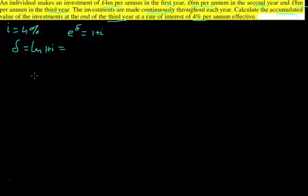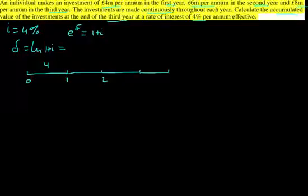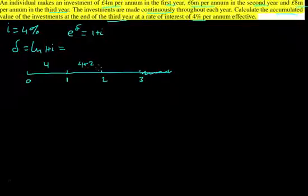So now let's find out the accumulated value. We're going to be using series. Let's have a quick look at what these payments actually look like. We're starting here and getting £4 million in the first year. Then in the second year, we're getting that £4 million again, plus another £2 million. And in the third year, we're getting £8 million — so that's the 4 again, the 2 again, and another 2.